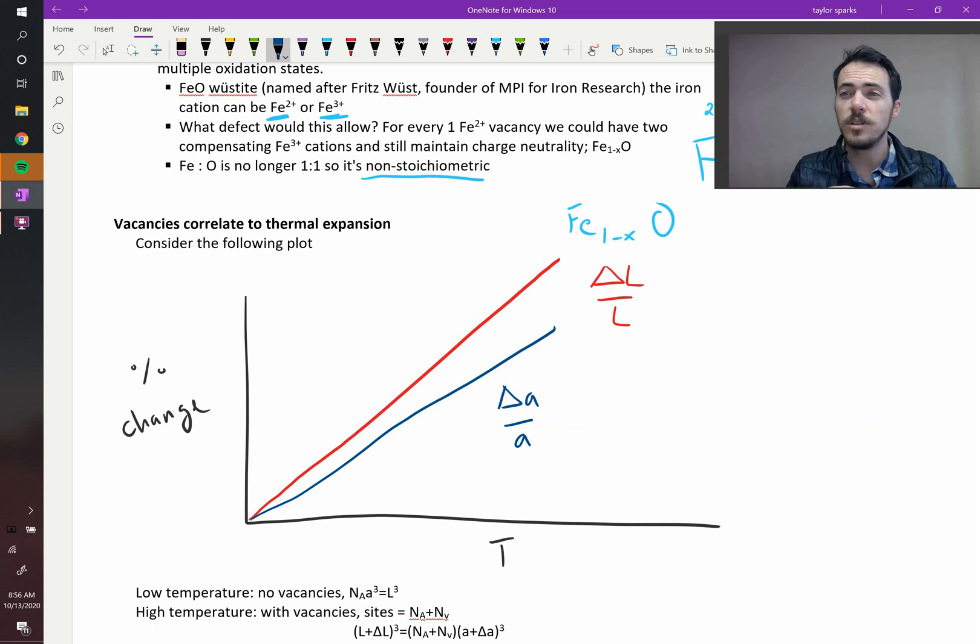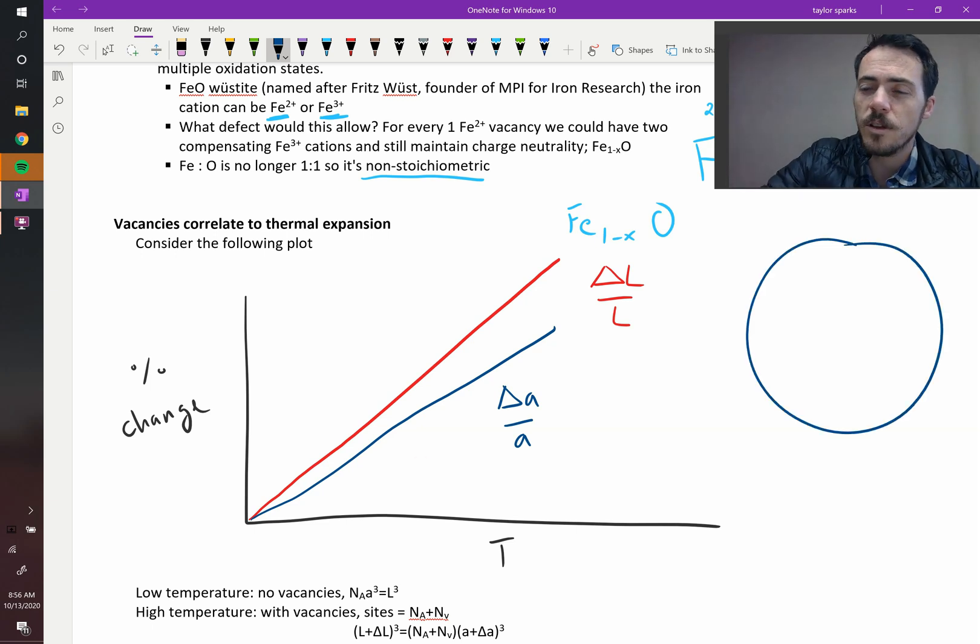Some of it is due to vacancy formation. Again, let's assume we had this big crystal, but we pull an atom out of the center, we put it on the surface, creating a vacancy in the center. That technically made the crystal a little bit bigger right here on the surface. So if you get enough of those, believe it or not, you can actually get a non-zero contribution to the overall expansion of your device from atoms coming out of the center or moving to the surface because of entropy.